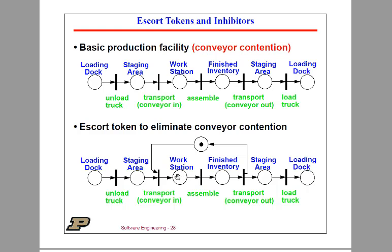Once the kit appears at the workstation, it's ready to be assembled. It can be assembled — that will consume a token there and produce it in finished inventory. When it's finished assembling and is in finished inventory, now it can be moved back out to the staging area. There's an input token here, so it's ready to fire. The token representing the finished inventory fires: you produce a token in the staging area and produce a token back in the escort location — that's the escort token again.